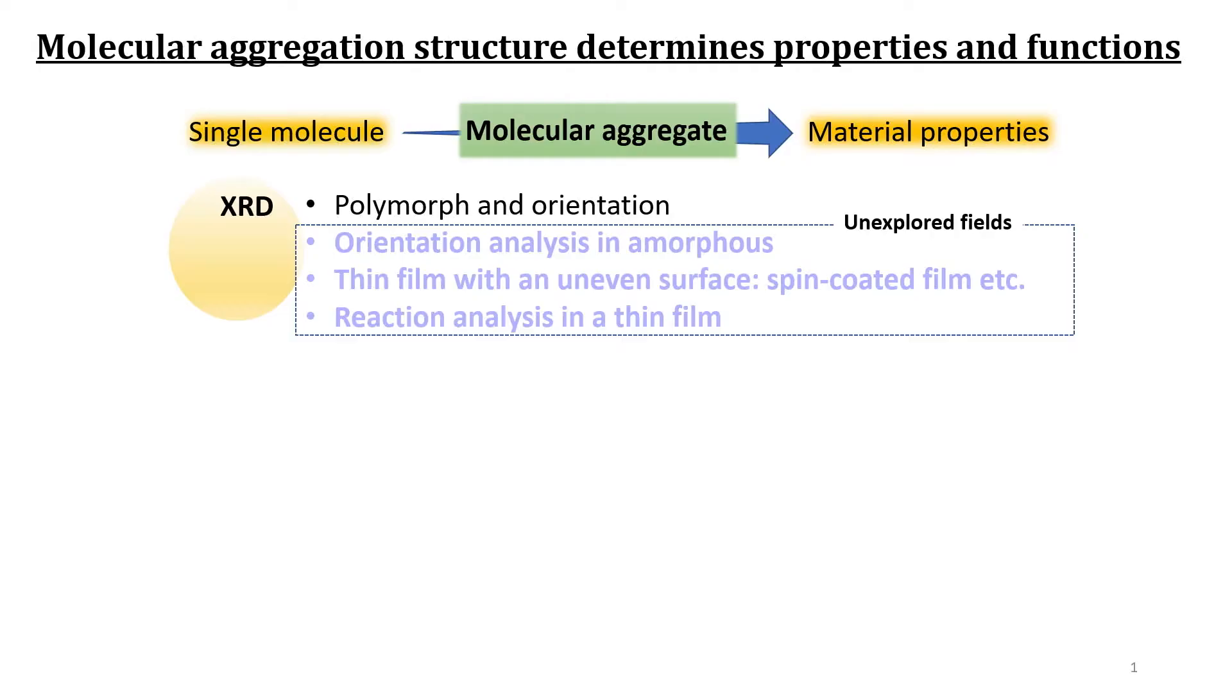MAIRS is specially designed for analysis of molecular orientation in thin film deposited on a solid substrate. Material properties of thin film cannot be determined by the primary chemical structure of a single molecule alone, but also by the molecular aggregation structure, which is a critical key to design the properties and functions of the thin film indeed.